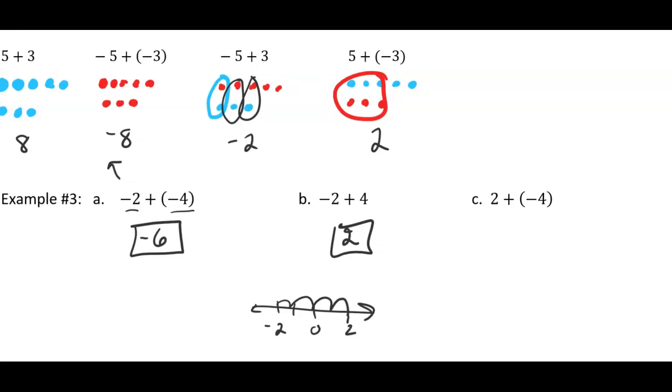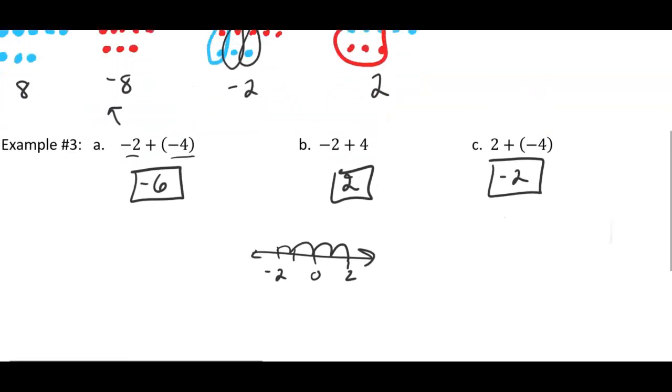And then our last example - I've got two blue chips but I'm bringing in four red chips. So I've got more negative than I do positive. The answer is going to be negative two. You can use the number line, you can use the chips, you can think about money. In your bank account you had $2 but you wrote a check for four, so now you're in the hole $2. That is addition.